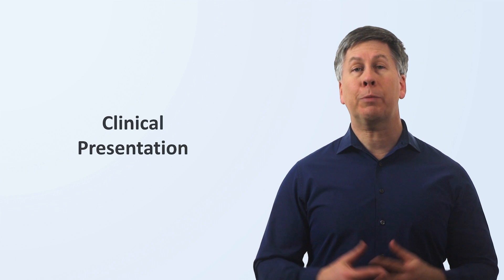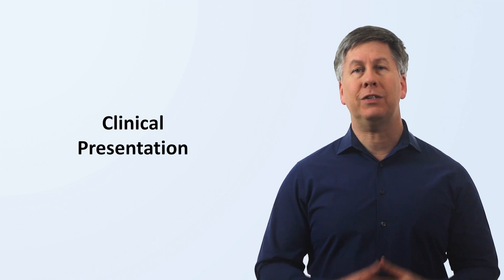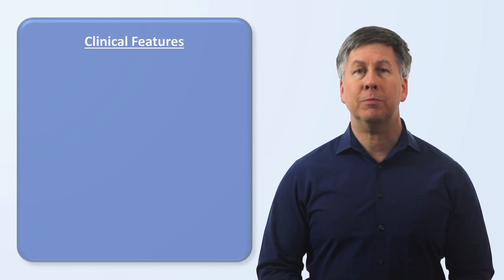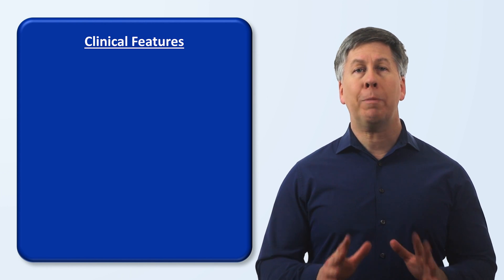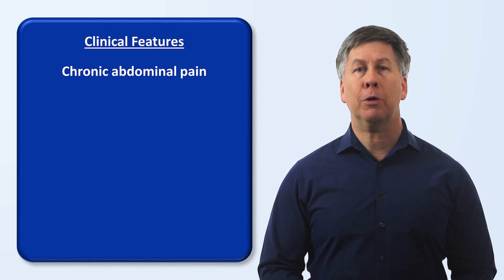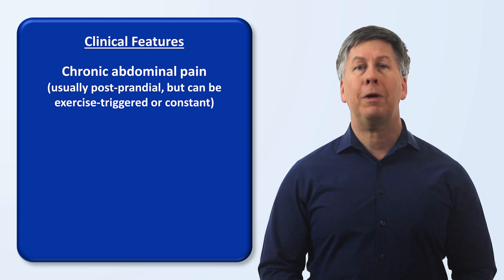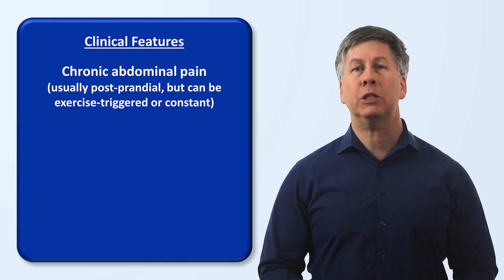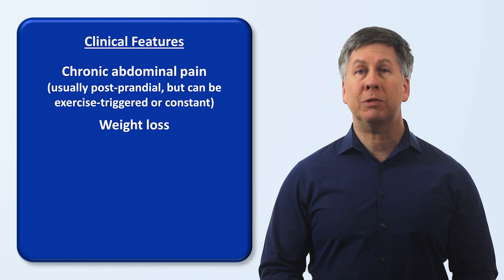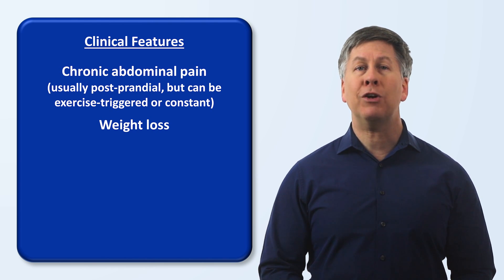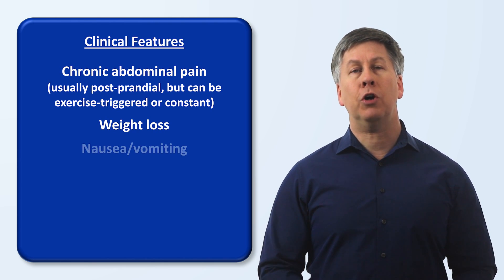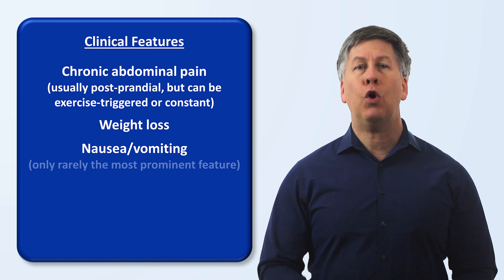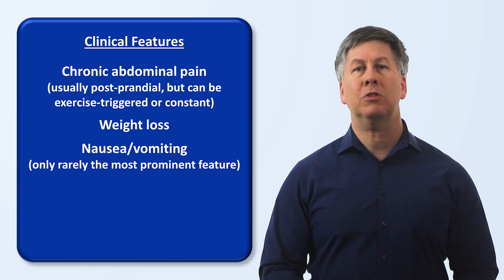Let's discuss the clinical presentation in a little more detail. The most common symptom, present in almost all patients, is chronic abdominal pain. The pain is usually postprandial — meaning worse shortly after eating — but it can also be triggered by exercise or be constant. Roughly half of patients experience weight loss, which can be substantial, and a significant minority of patients experience nausea and vomiting, but this is only rarely the most prominent symptom.